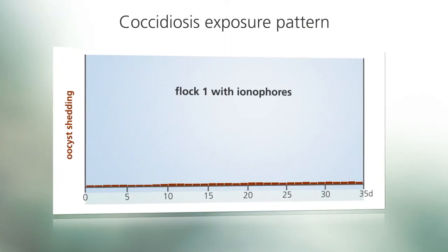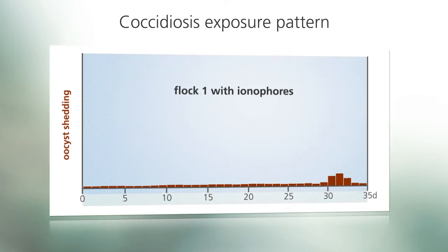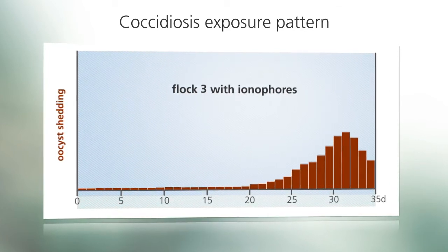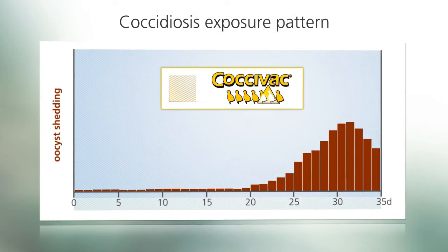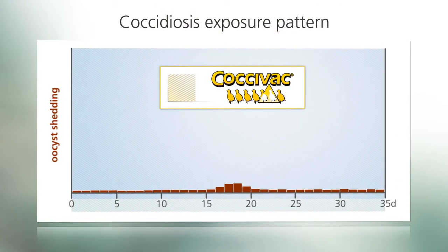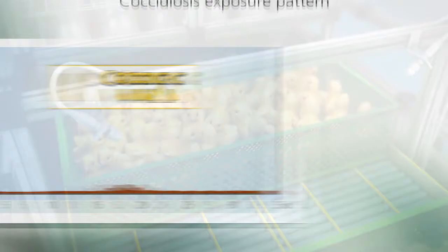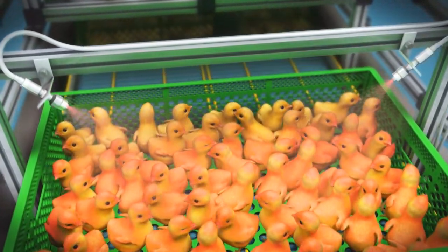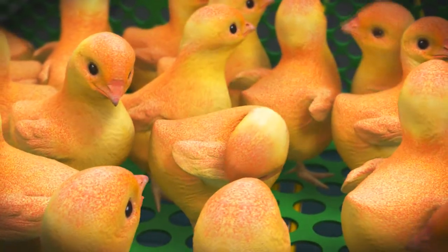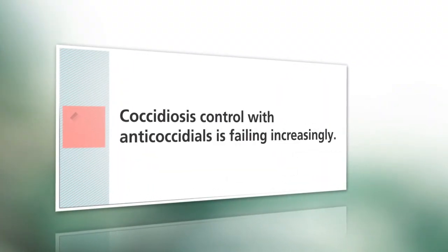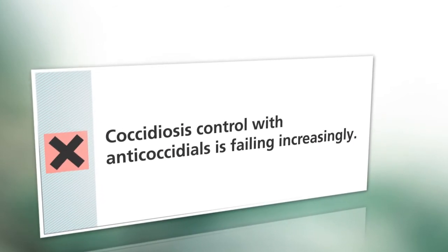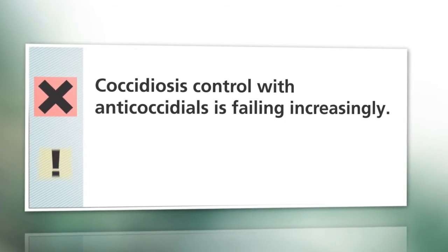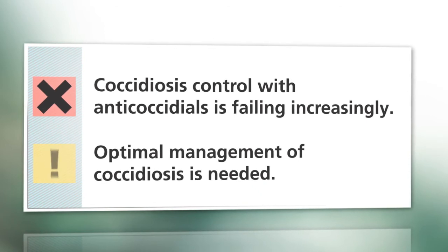Rotation back to anti-coccidials is not the greatest advantage of vaccination programs — it only provides a temporary improvement in response to anti-coccidial drugs. The greatest advantage lies in the establishment of a new, lower coccidiosis exposure pattern that is sustainable year-round. Management of coccidiosis through vaccination is the best way to reduce the overall coccidiosis challenge in the poultry house, as control with anti-coccidials alone is becoming increasingly insufficient and carryover continues to increase.